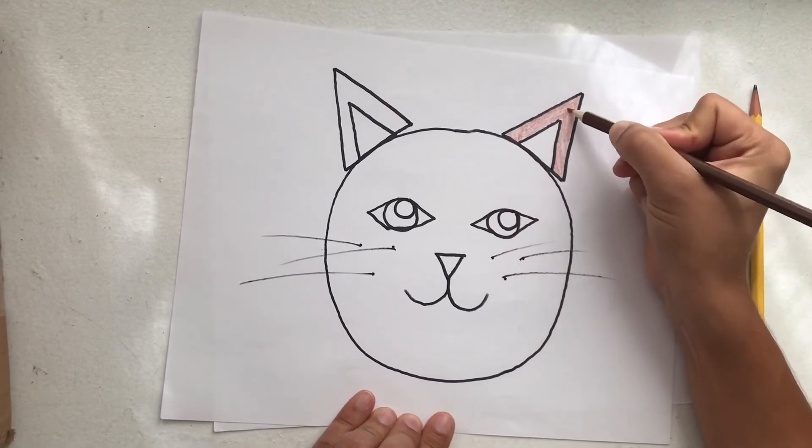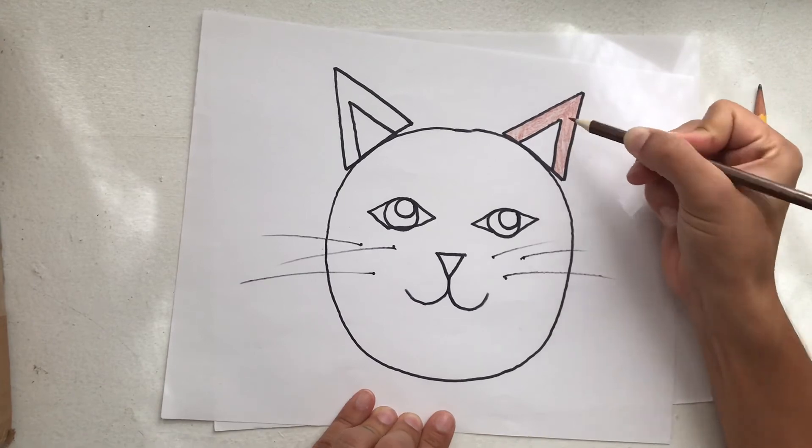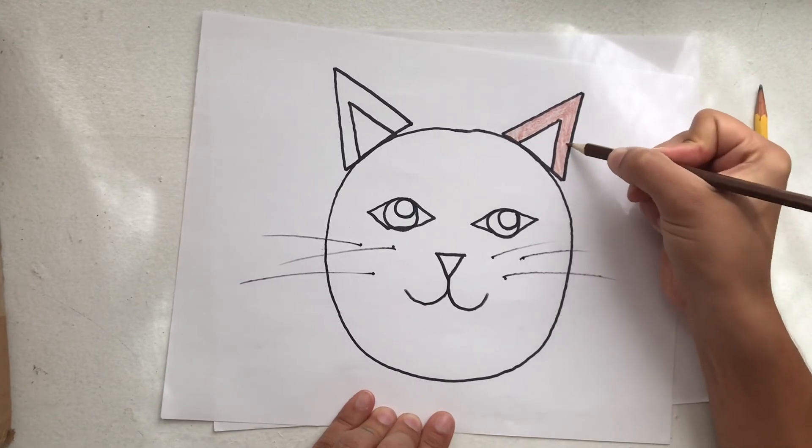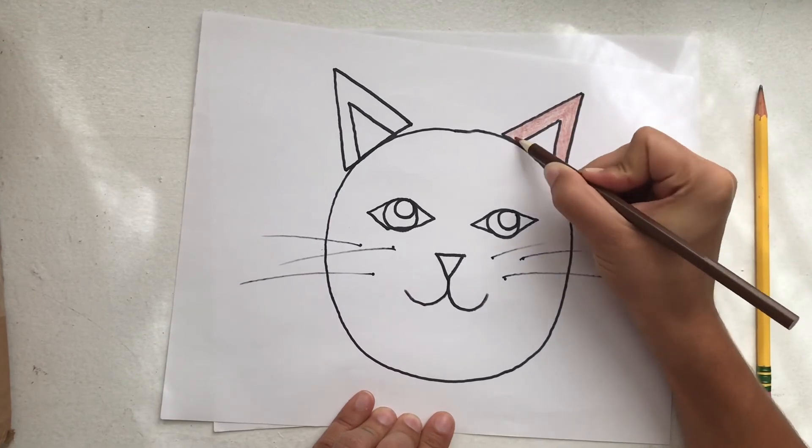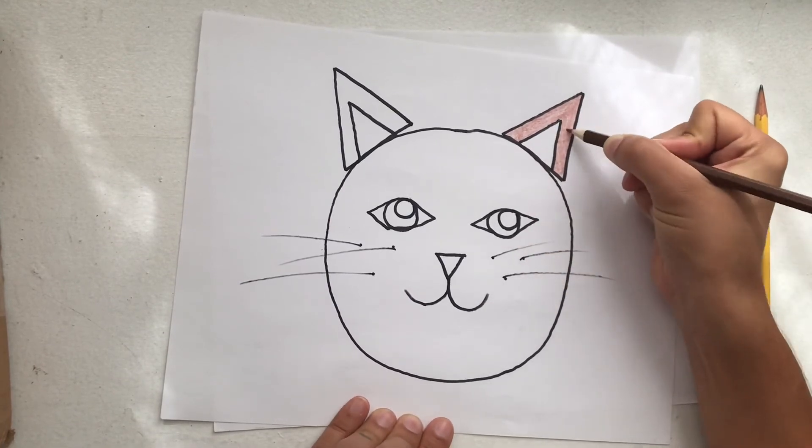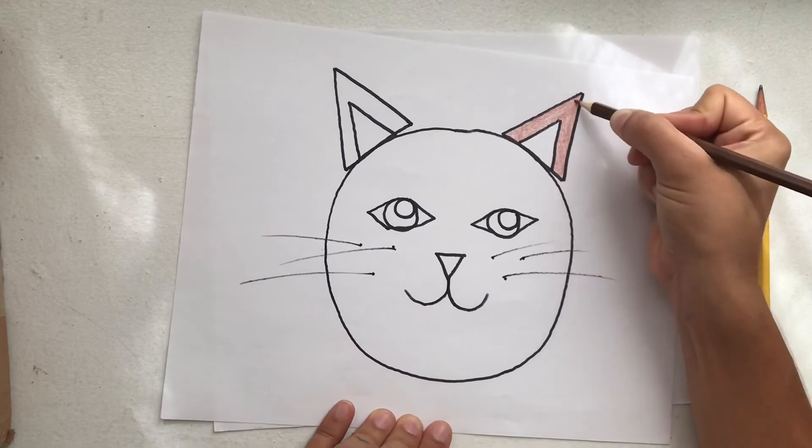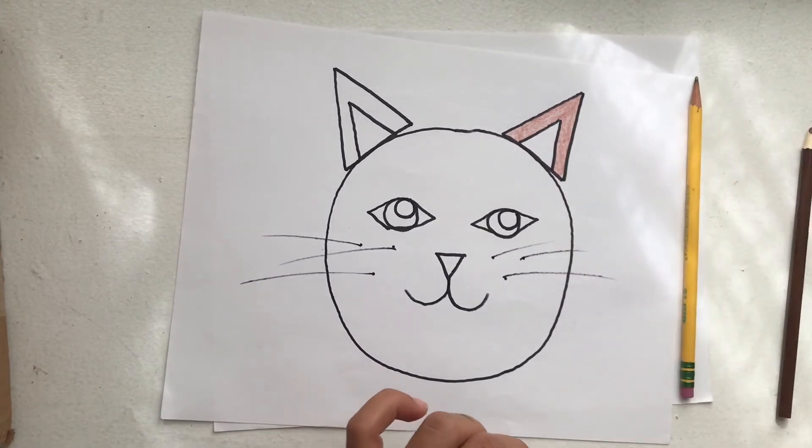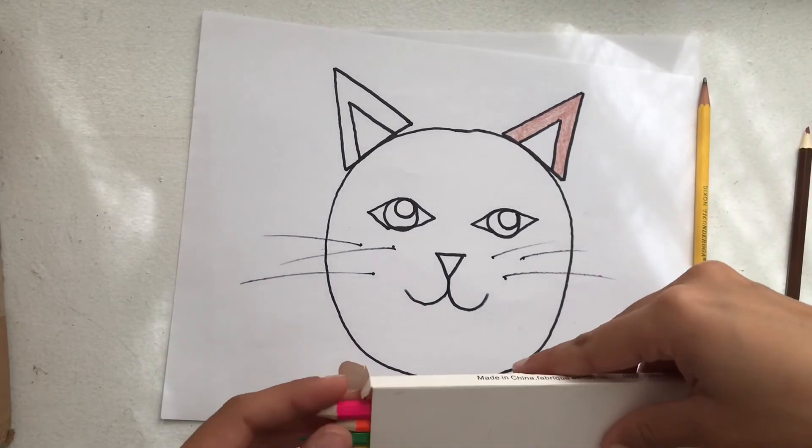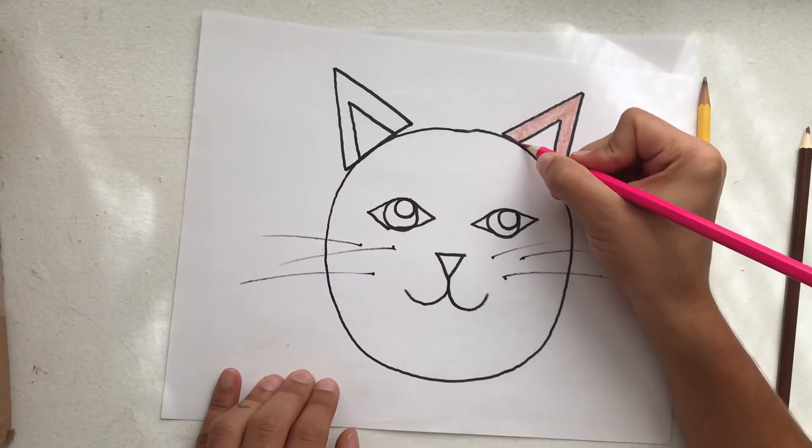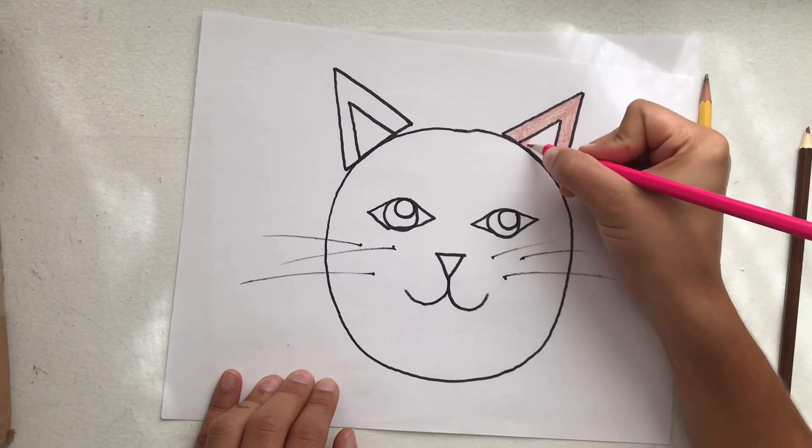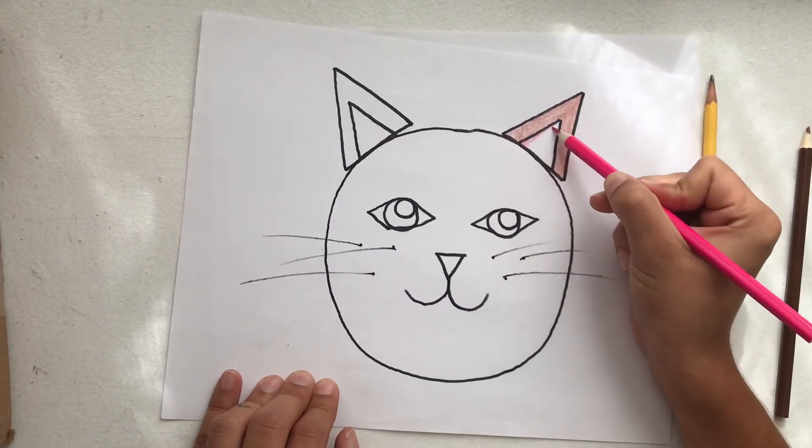Notice how when I color in my ear I work my hardest to stay inside the lines and to color the whole thing so there's no white paper showing. I want to take my time and do my best. For the inside of my kitty ears I'm going to use a pink color for the smaller triangle. Remember to go slowly and do your best work.